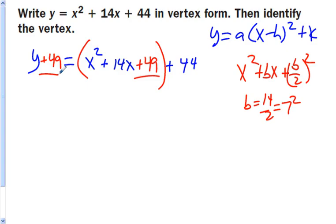But remember, if I add it on one side, I have to add it onto the other side. So I have y plus 49 equals x squared plus 14x plus 49 plus 44.